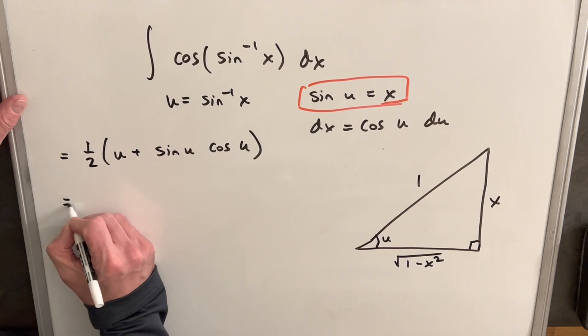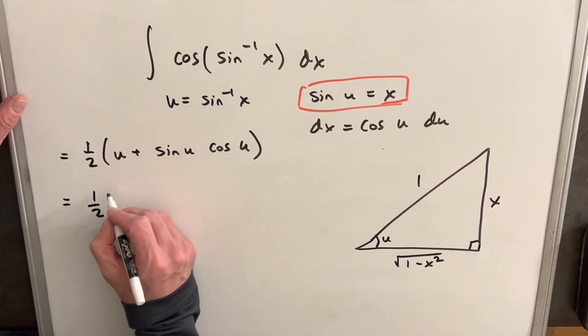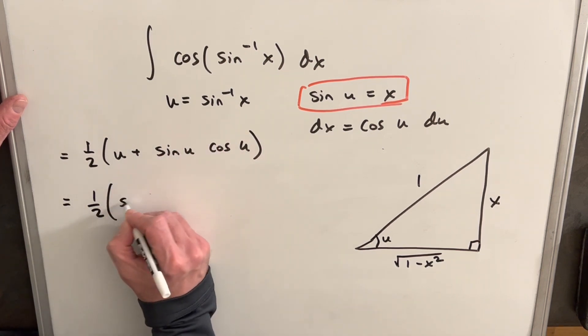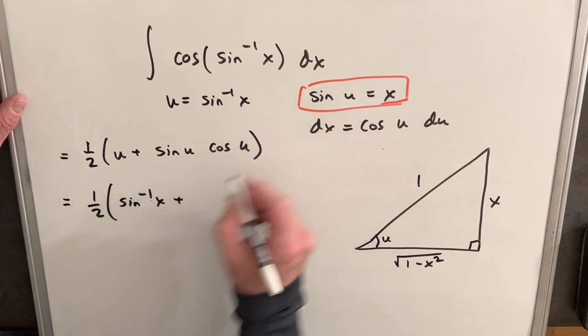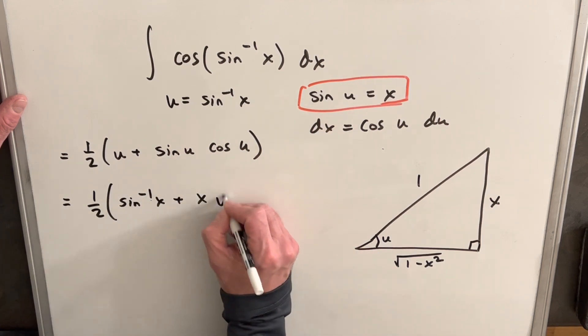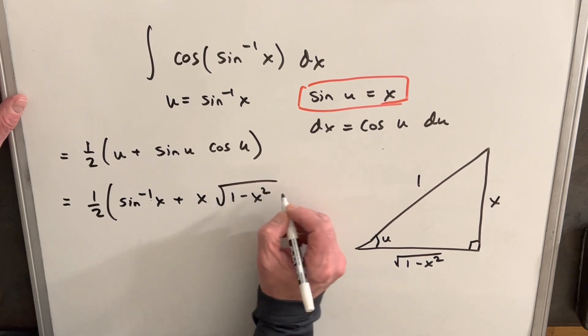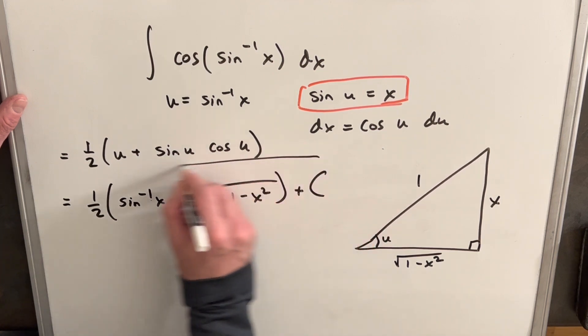So then we have everything we need to finish this off. We have a half outside, our u is sine inverse x, sine of u is x, cosine of u is 1 minus x squared. We just need a plus c, and we're done.